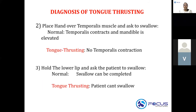The second diagnostic method is to place your hand over the temporalis muscle and ask the child to swallow. Normally, the temporalis will contract and the mandible is elevated. But in tongue thrusting, you don't see temporalis muscle contraction — that is how you diagnose tongue thrusting based on the temporalis muscle.